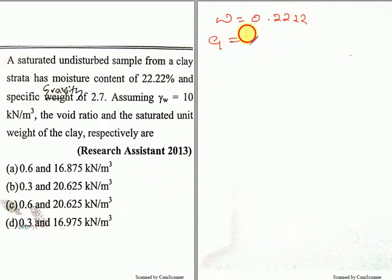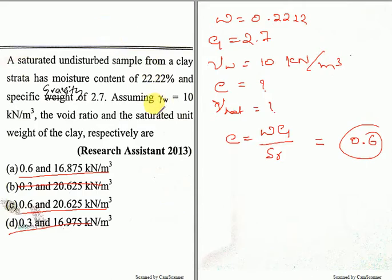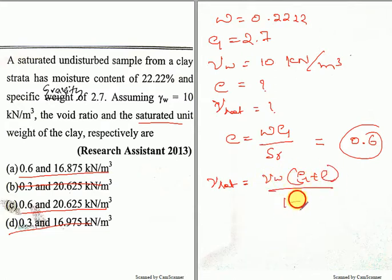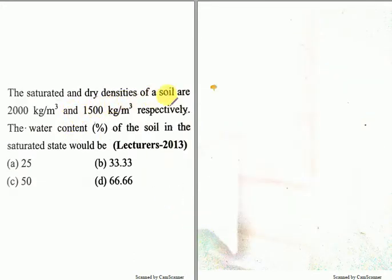A saturated undisturbed sample of clay having a moisture content equal to 0.2222 and specific gravity equal to 2.7 — assuming unit weight of water is 10 kilonewton per meter cube. We have to find the void ratio and saturated unit weight. γsat will be equal to γw times (G plus E) divided by (1 plus E). If you solve using this equation you are supposed to get 20.625, so option C will be the right answer.